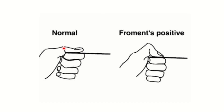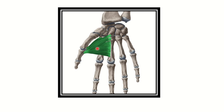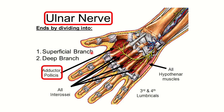If the function of the adductor pollicis muscle is lost, the normal grip is also lost. In this case, the interphalangeal joint is activated and holds the paper instead — this is the compensatory mechanism. So when adductor pollicis function is lost, the interphalangeal joint becomes active and the adductor pollicis longus muscle is recruited.